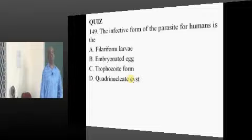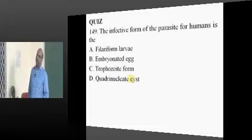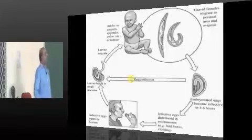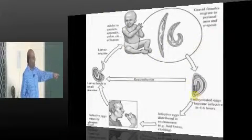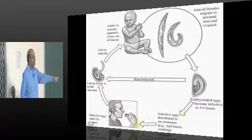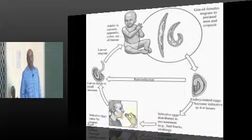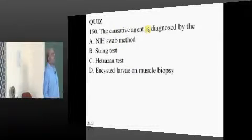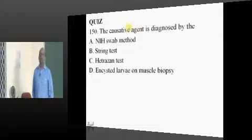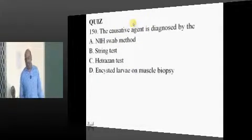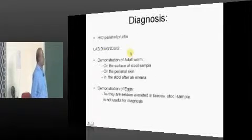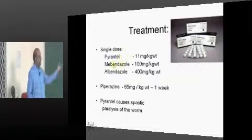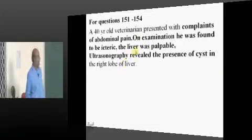What are the infective forms? Embryonated egg — there is no second part. The gravid females migrate to the perianal area, and the embryonated eggs formed there are infective to human beings. The causative agent is diagnosed with the NIH Scotch tape test. Treatment is pyrantel, mebendazole, and albendazole.